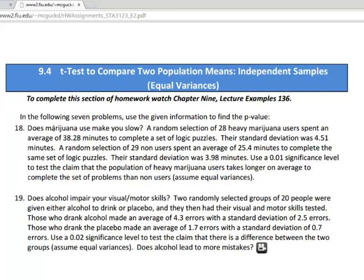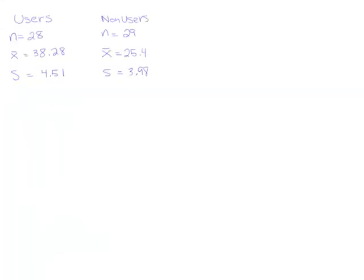I've just taken the data from this paragraph and put it separated onto a sheet of paper. So we have users and non-users. The sample size is 28, 29 for the other group. We have the different means and the standard deviations.